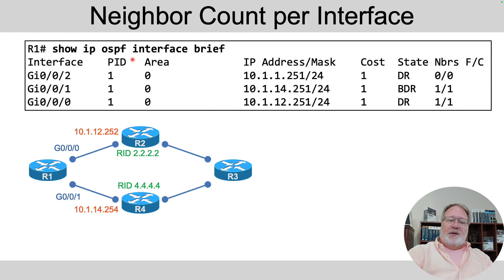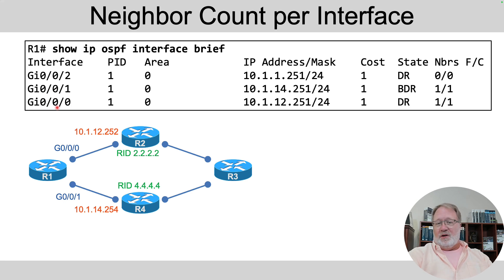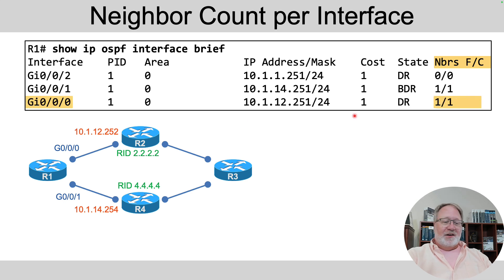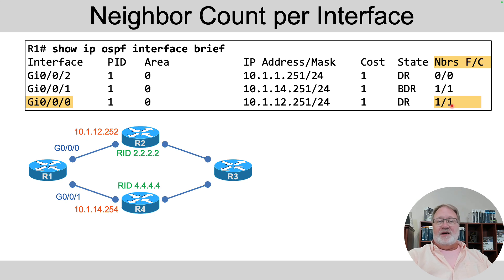You can also see a count of neighbors with the show IP OSPF interface brief command. On each OSPF-enabled interface off router R1, you get output with a neighbor count in the far right — fully adjacent neighbors and total count. Off GigabitEthernet0/0/2, the LAN with no other neighbors, the count is zero. On GigabitEthernet0/0/0, you see one fully adjacent and a total count of one. If you expect one neighbor, the second number after the slash should be one; if you expect two, you should see two.